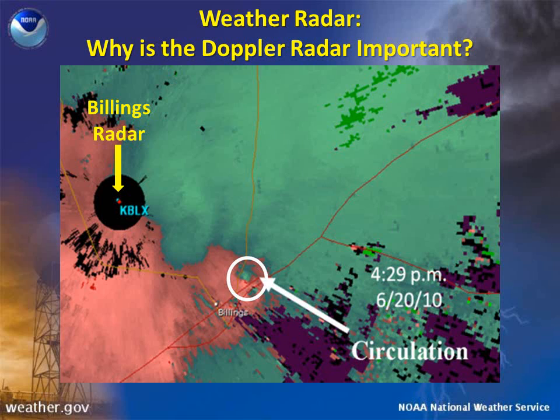In this example, we see a snapshot of Doppler radar data showing circulation at the time of the June 20, 2010 Billings tornado. The Billings Doppler radar, labeled KBLX, is in the middle of the black circular region towards the left of the radar image, while the circulation is in the white circle.